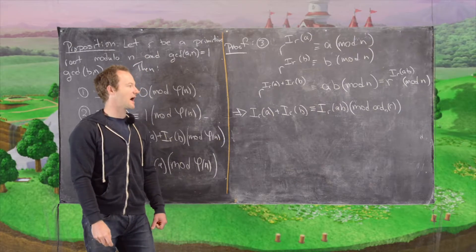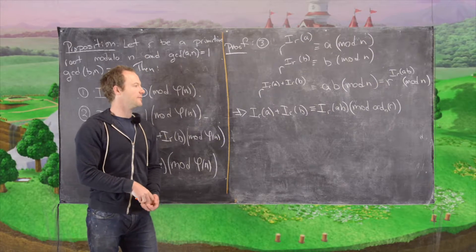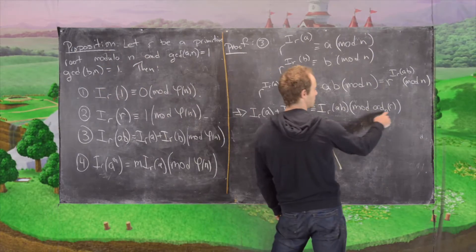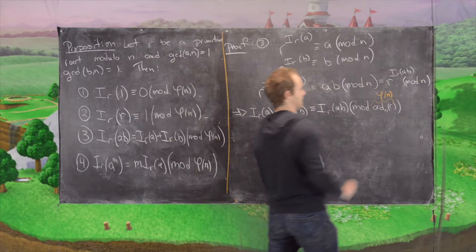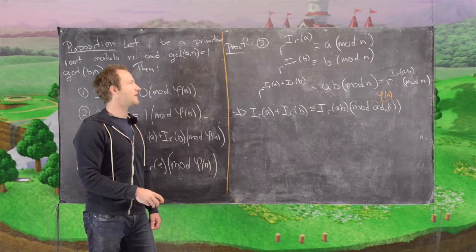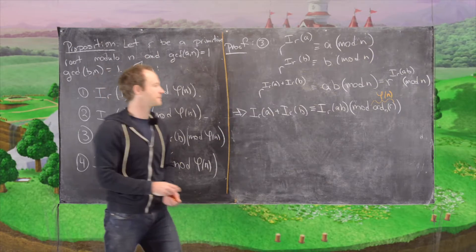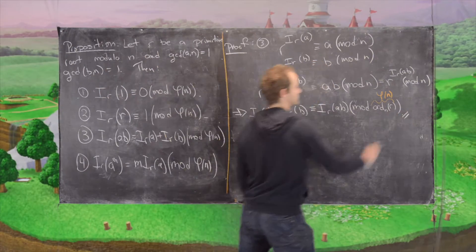That's exactly how that result reads. But notice that the order modulo n of r is exactly phi of n, which finishes the proof of part three.